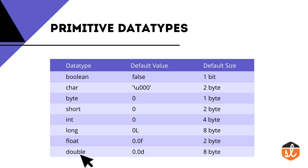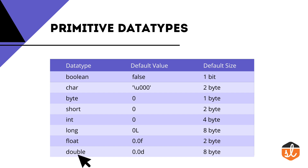By default, the decimal data type is double. For float, the default value is 0.0f and the default size is 2 bytes. For double, the default value is 0.0d and the default size is 8 bytes. This is the tabular representation of all the primitive data types.